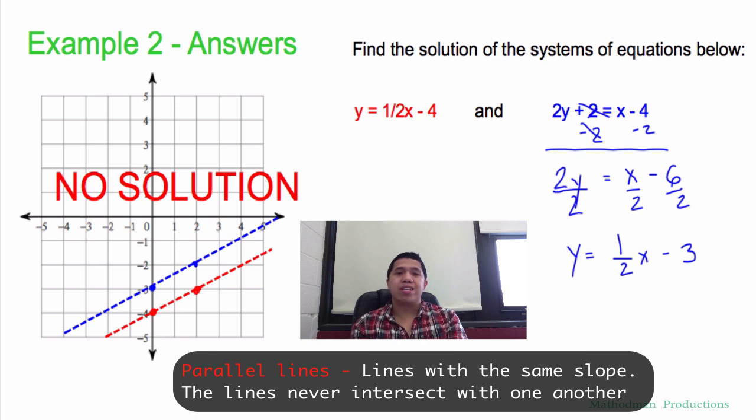So like what I said, the solution is where they cross, but if they don't cross at all because they're parallel, then there's no solution.